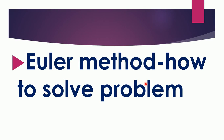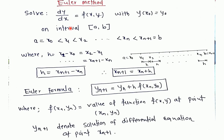In this video I am going to explain how to find the numerical solution of a differential equation using the Euler method. If we have a differential equation dy/dx = f(x, y) with initial condition y(x₀) = y₀, this initial condition means y₀ is the solution of the differential equation at initial point x₀. Our interest is to find the solution of this differential equation at more points of the interval [a, b].